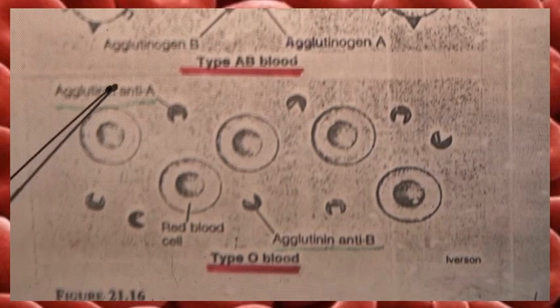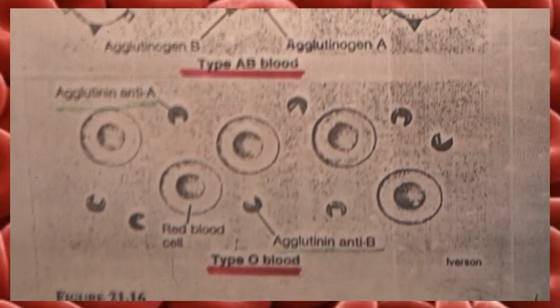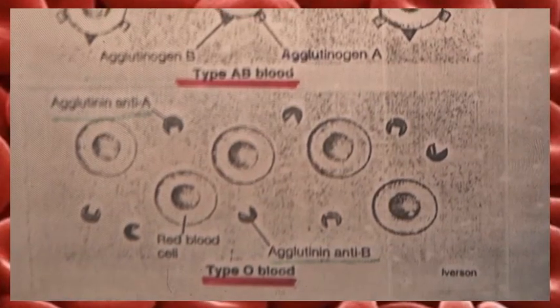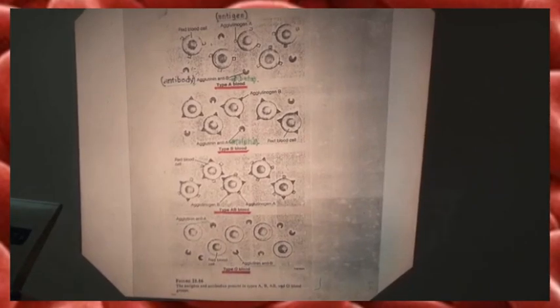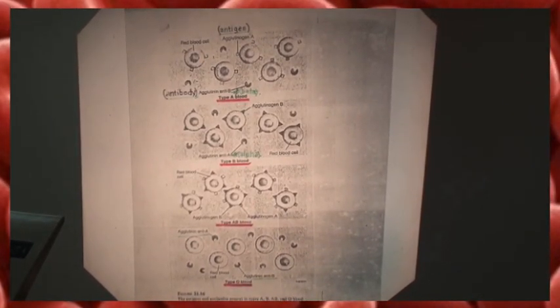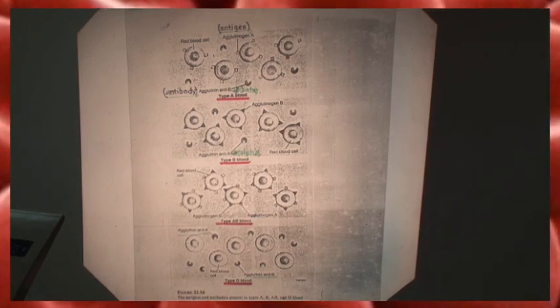Type O has both antibodies — anti-A and anti-B — in the plasma. These antigens are genetically inherited from birth till death and can also be traced in other tissues such as salivary glands, pancreas, kidney, liver, lungs, testis, semen, and amniotic fluids.